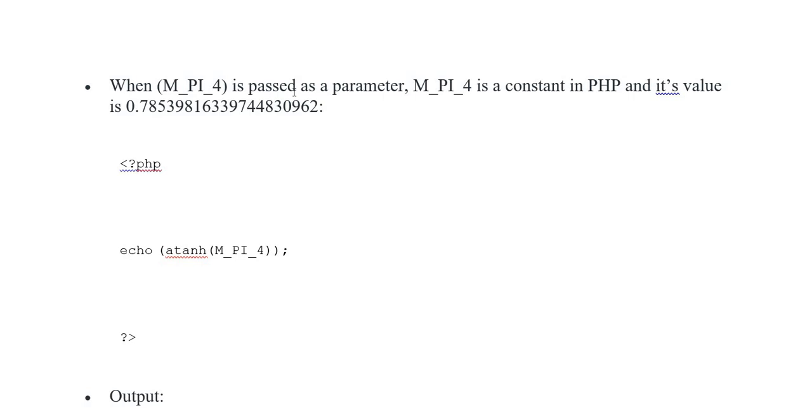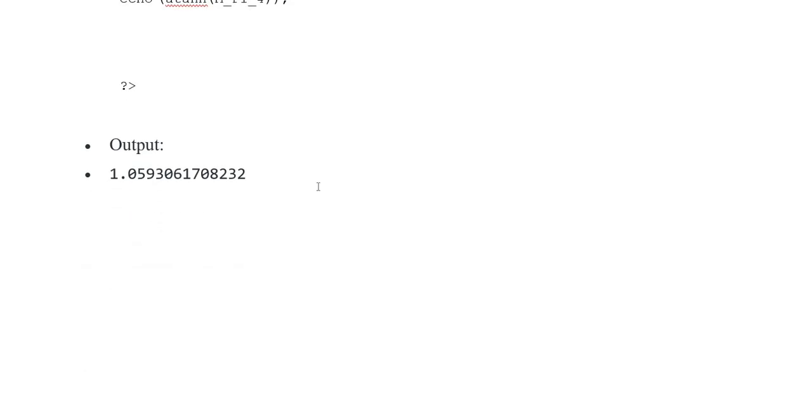When M_PI_4 is passed as a parameter, M_PI is a constant in PHP and its value is 0.78 something. PHP opening tag, echo atanh(M_PI_4), output is 1.05 something represented here. Thank you so much, Allah Hafiz everyone.